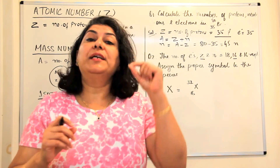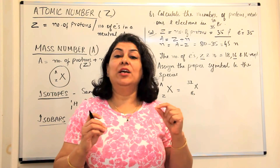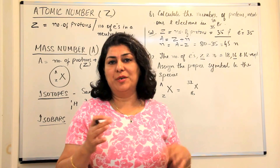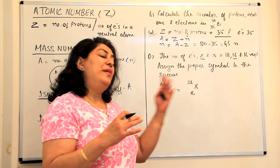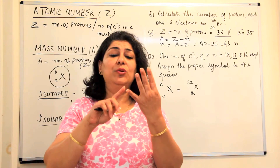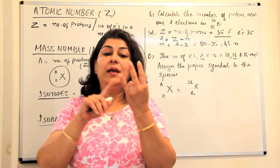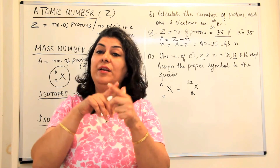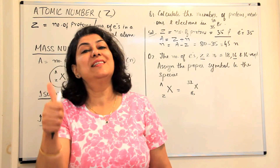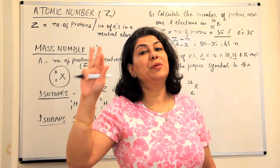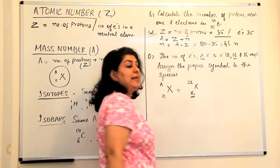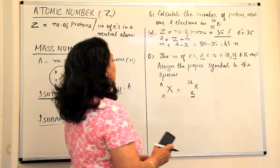Which element has atomic number 16? You can refer to the periodic table. Counting through the first 20 elements — hydrogen, helium, lithium, beryllium, boron, carbon, nitrogen, oxygen, fluorine, neon (that's 10), then sodium, magnesium, aluminium, silicon, phosphorus (15), the 16th is sulfur, followed by chlorine, argon, potassium, calcium. So the 16th element is sulfur, and the symbol for sulfur is capital S.